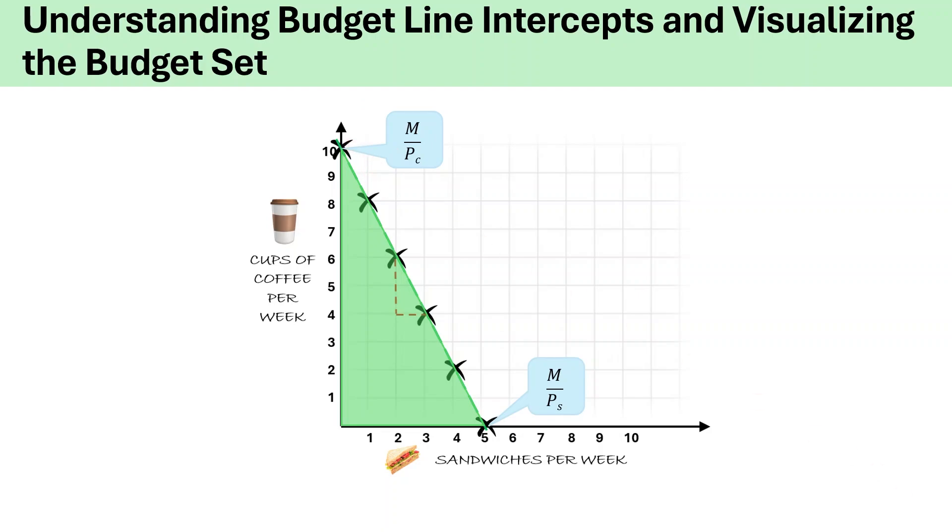Remember, every point on or below the budget line represents part of the budget set. Budget set includes all the possible bundles or combinations of sandwiches and coffee, the consumer can purchase within their $20 budget at the given prices.